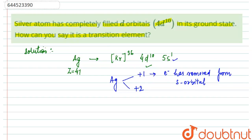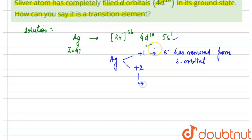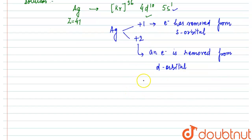So this is okay. But in the case of +2, electron is removed from d orbital. An electron is removed from d orbital. And this is how we have now 4d9.